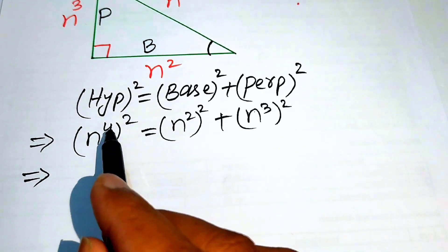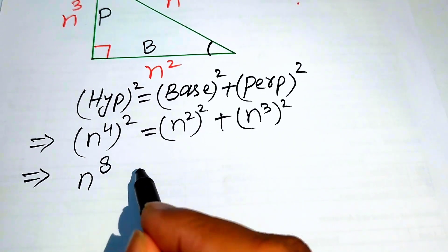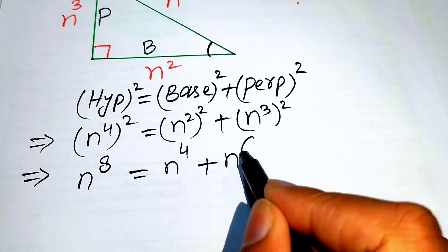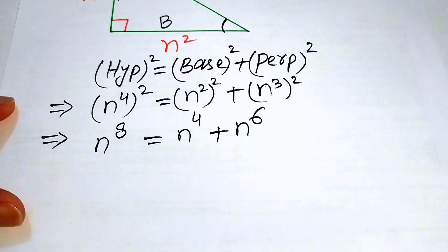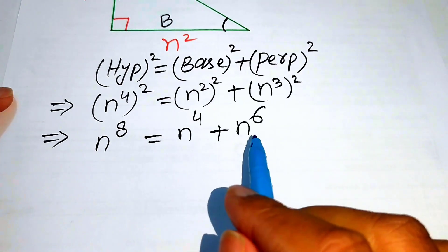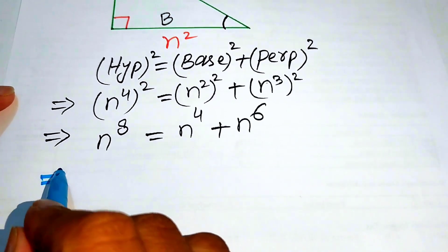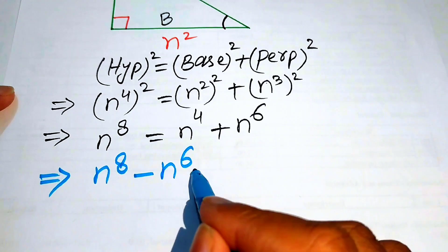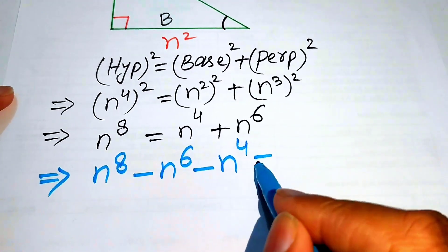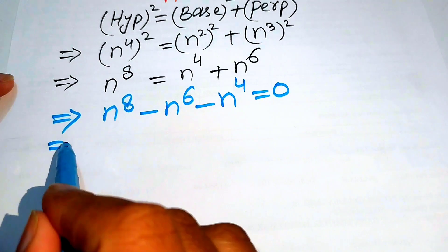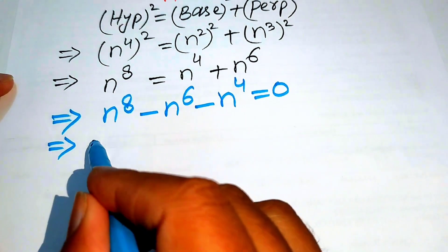We multiply the exponents and get n to the power of 8 equals n to the power of 4 plus n to the power of 6. We move terms from the right-hand side to the left-hand side, giving us n to the power of 8 minus n to the power of 6 minus n to the power of 4 equals 0.